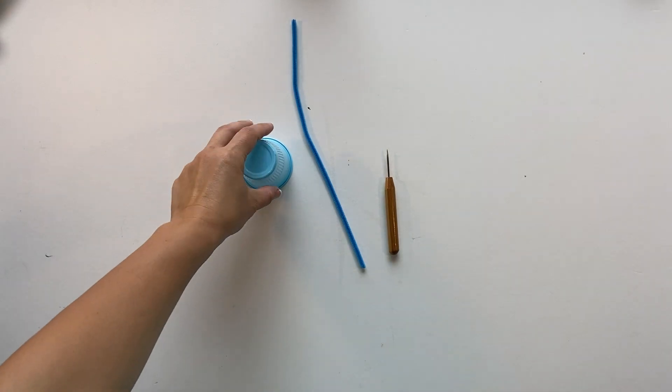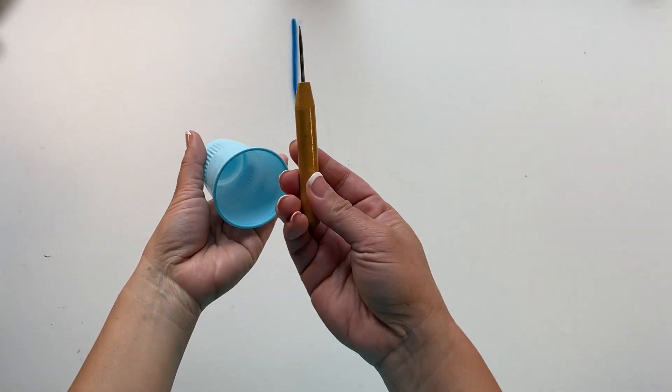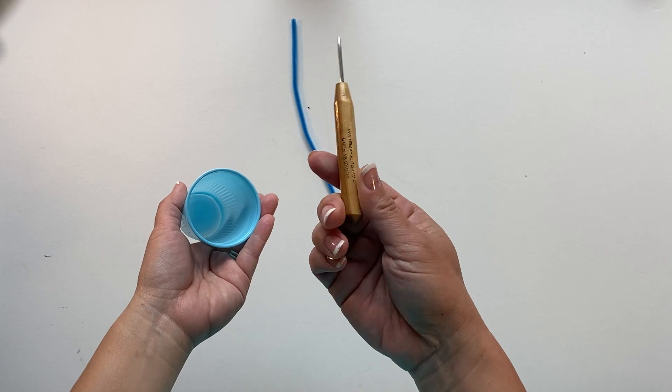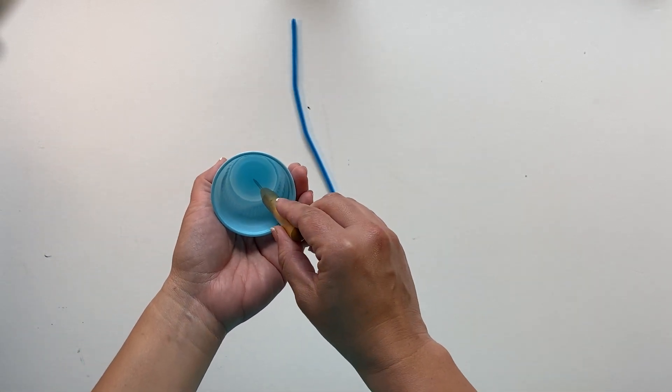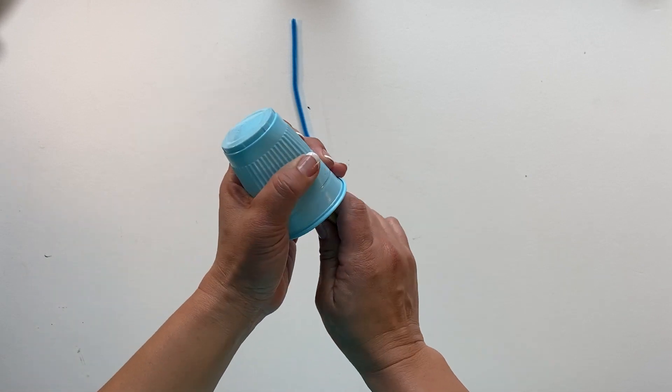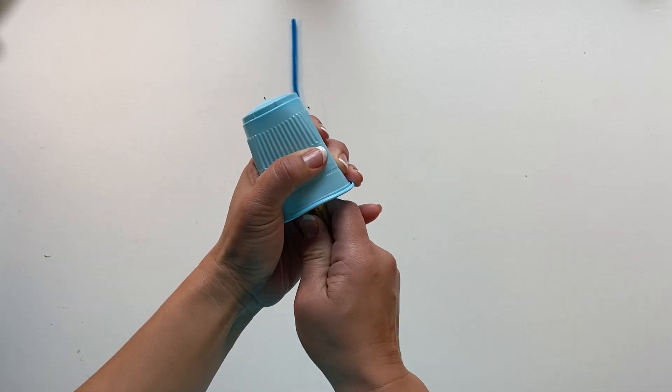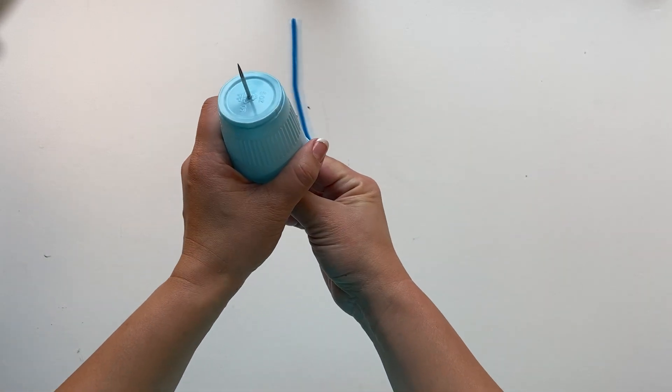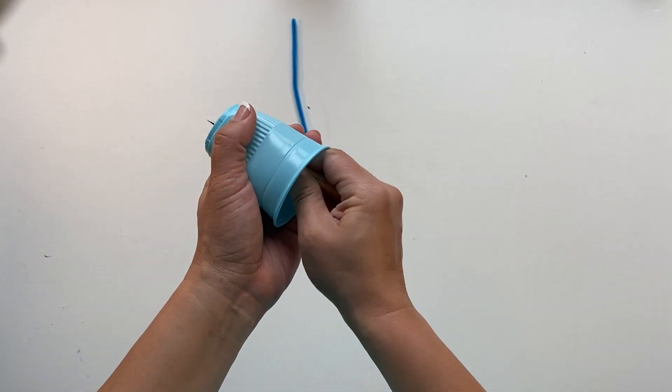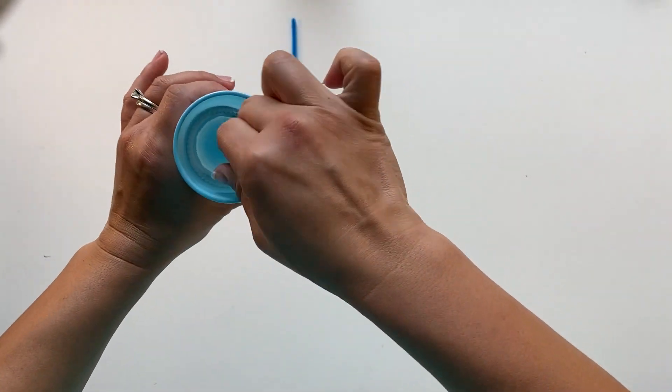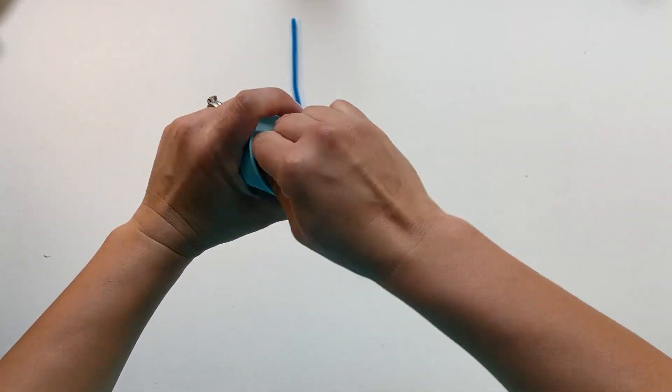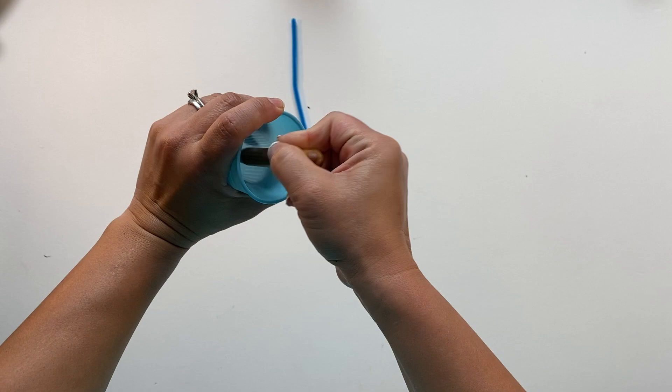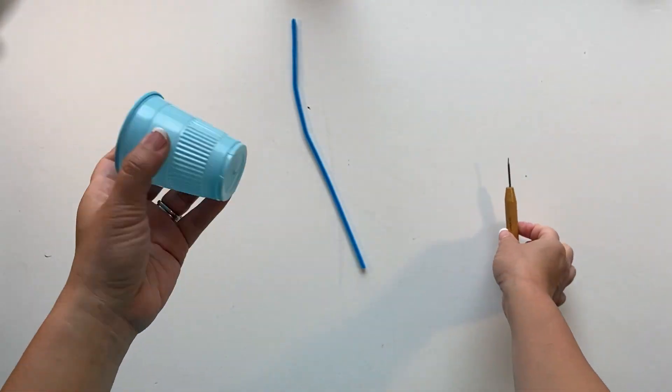So next you take your cup and you use, I have one of these tools that pokes holes in things, but you can use an exacto blade and just have your parents help you to make a hole at the bottom of the cup right in the middle. Be very careful, you don't want to get hurt, and just try to make it really big so it's easier to put the pipe cleaner through it.